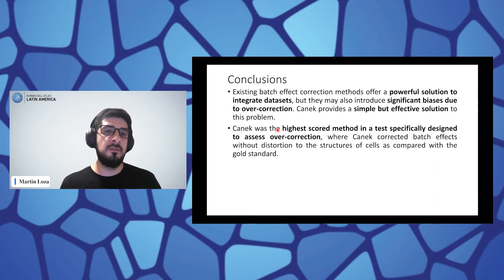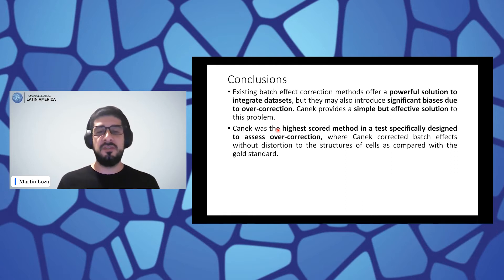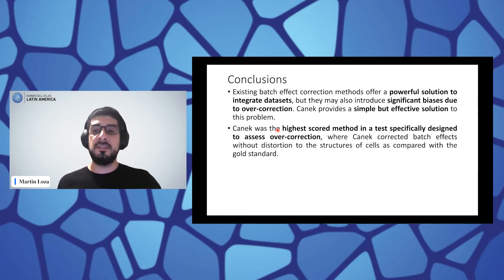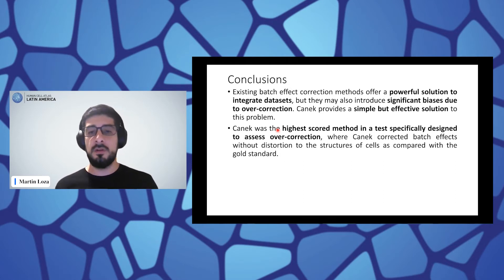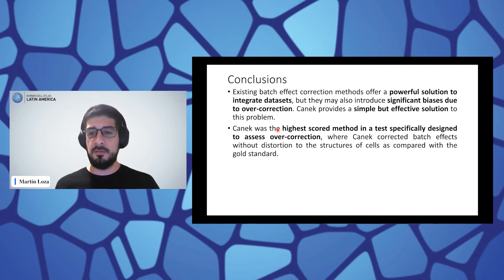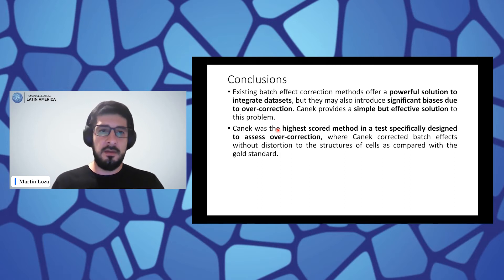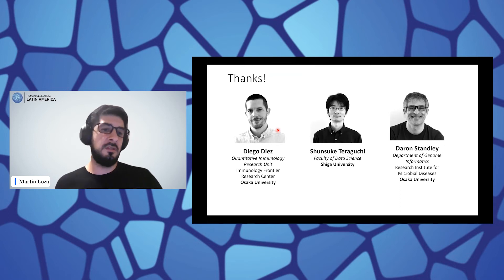I would like to conclude with two main conclusions. Number one: existing batch effect corrections offer powerful solutions to integrate datasets, but can introduce biases due to overcorrection; CanEq provides a simple but effective solution to this problem. Number two: CanEq was the highest-scoring method in a test specifically designed to assess overcorrection, correcting batch effects without distortion of the cellular structure compared to a gold standard. Thank you all for listening, and I'm happy to reply to any questions.